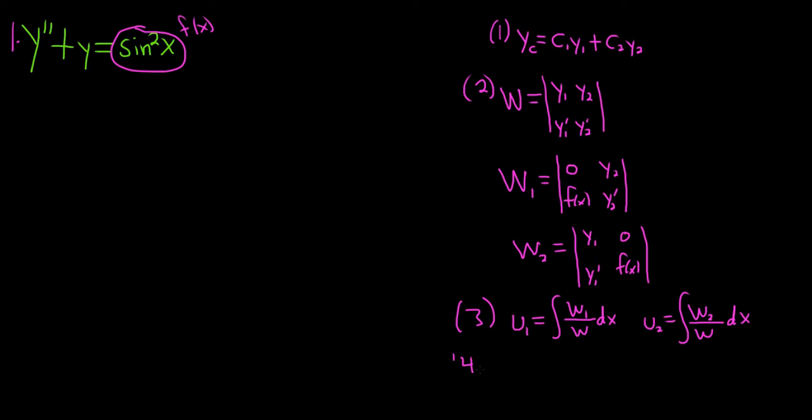The fourth step is to compute y sub p, which is your particular solution. This is equal to u1y1 plus u2y2. And the very last step, step 5, is the final answer. The final answer is y equals yc plus yp.